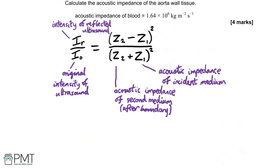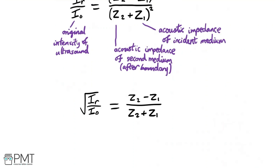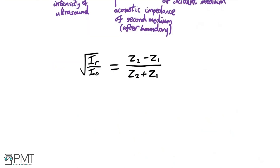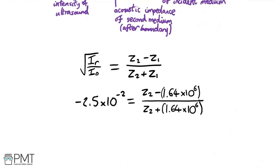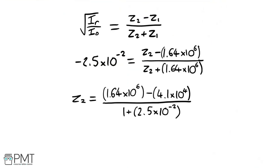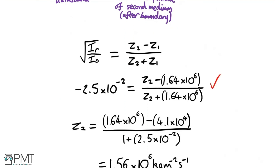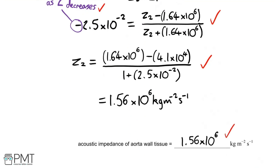Square root both sides of the equation. The question states there is a decrease in acoustic impedance across the boundary, so we need the negative value of the square root of IR over I₀. Substituting in values and rearranging to make Z₂ the subject gives 1.56 × 10⁶. The first mark is for substituting values; the second mark is for correctly selecting the negative root; the third mark is for rearranging correctly; and the fourth mark is for the correct answer. Four marks.